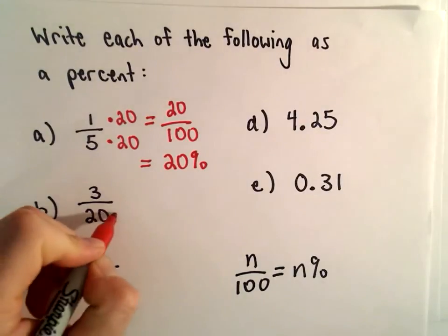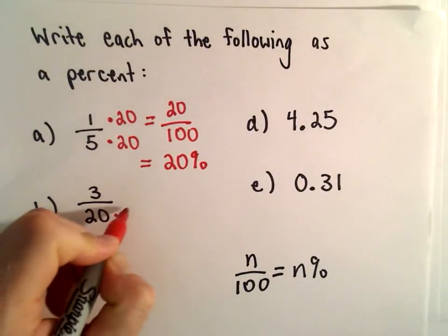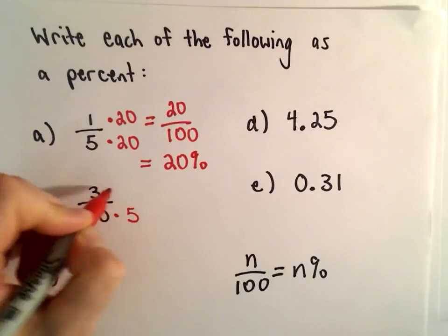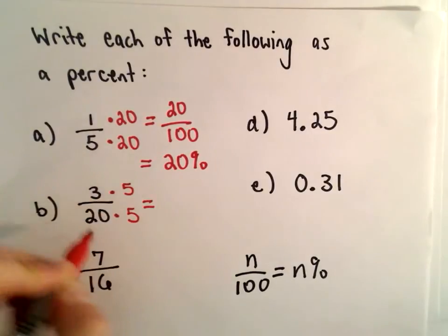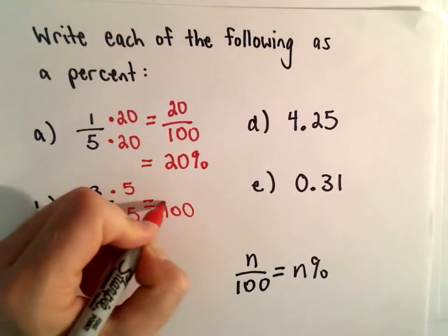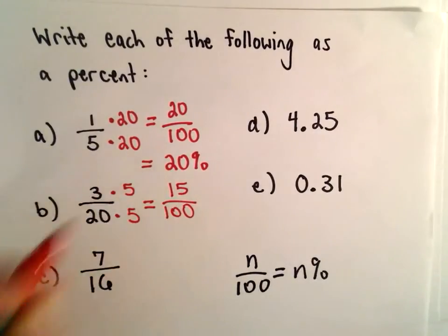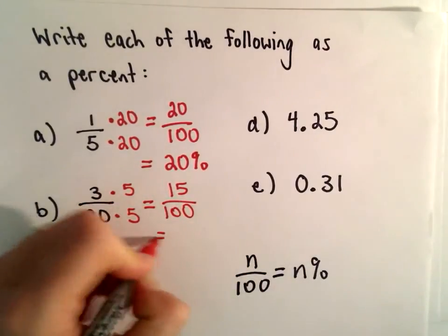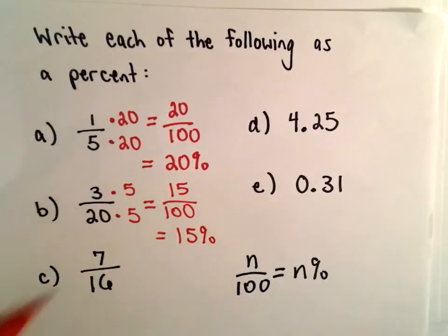Part B, we can do the same thing. We could multiply the denominator by 5, and also the numerator by 5. So we have 100 in the denominator, 15 in the numerator, and that would be the same thing as 15%.